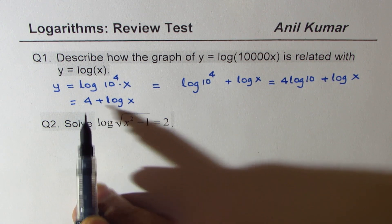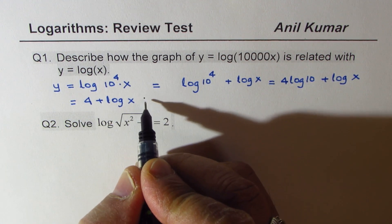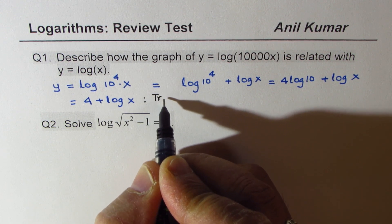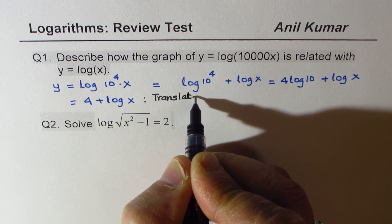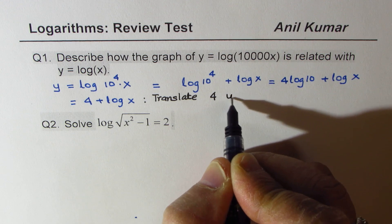Perfect. So it is 4 units translated up, and now the transformation will be, so the answer will be: translate 4 units